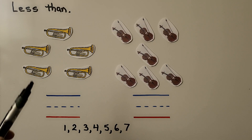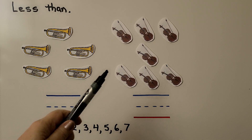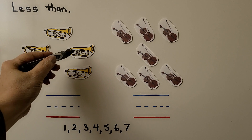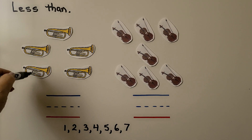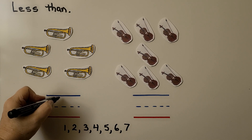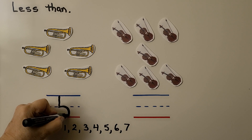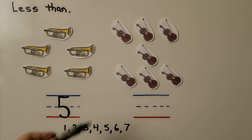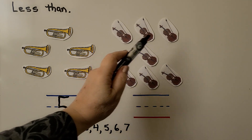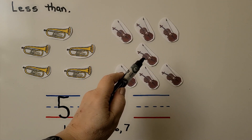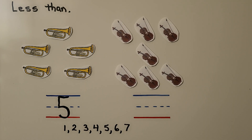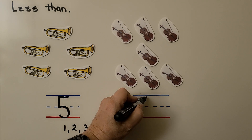Here we have a set of trumpets and here we have a set of violins. We can count the trumpets: one, two, three, four, five. We can write the number five. We can count the violins: one, two, three, four, five, six, seven. There are seven violins. We can write the number seven.